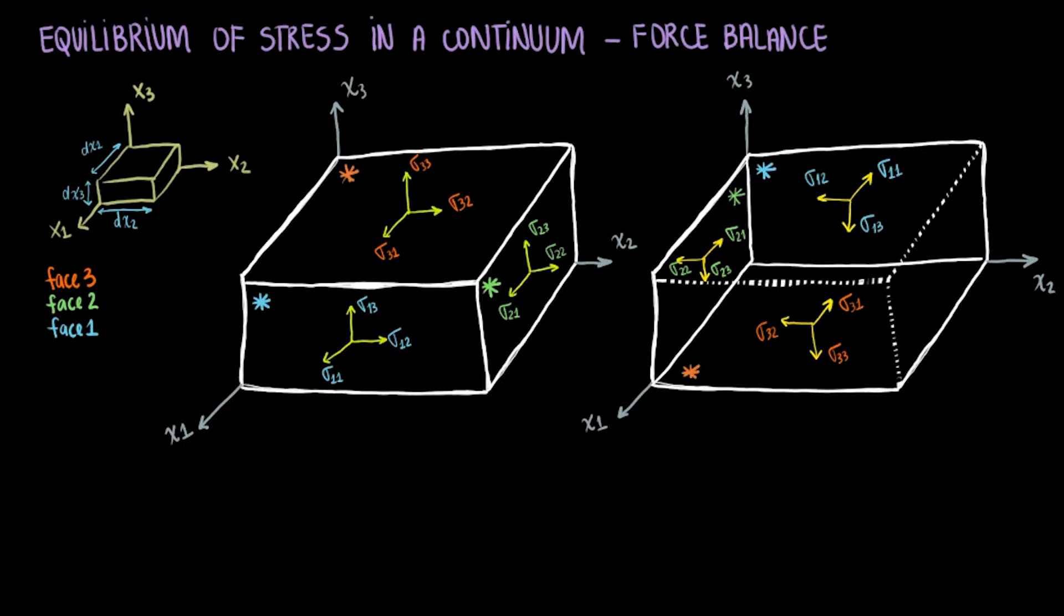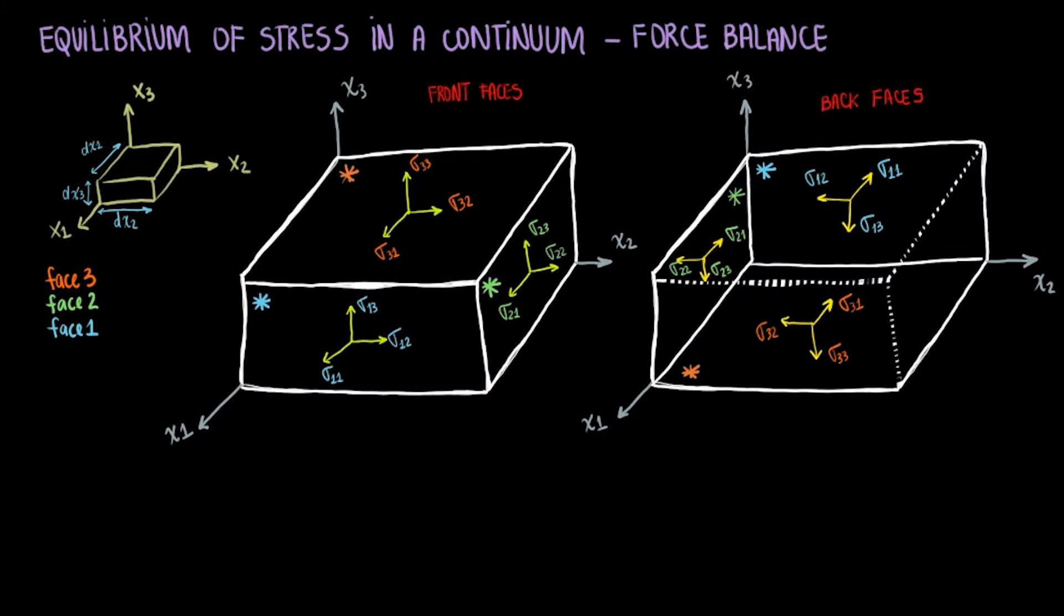The terms added to each stress component on the front faces are what accounts for the changing nature of the stress along each axis. That is, sigma ij will be changing continuously. I know it looks like there is a lot, but this can actually be very digestible if you think about it for a bit. Please pause the video to check on the indices on each stress component. You will develop the intuition quickly after noticing how they relate.